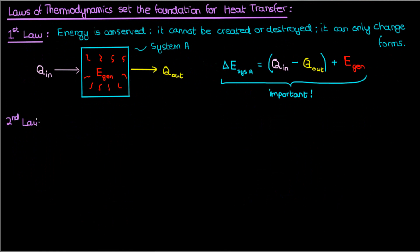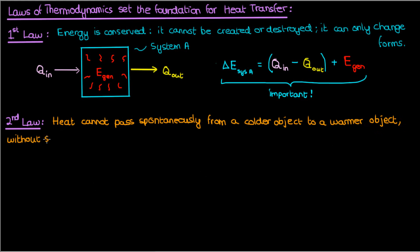So for the second law of thermodynamics, there's many ways of expressing it, and perhaps the simplest way is to use the Clausius statement. All this says is that heat cannot spontaneously pass from a colder object to a warmer object without some external work being done. So the second law establishes a directionality of heat transfer.